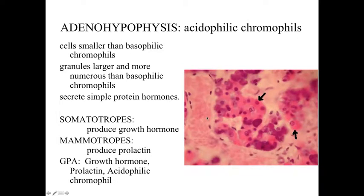The second category of cells within the anterior pituitary, the adenohypophysis, are going to be the acidophilic chromophils. Acidophilic because they're going to be taking up the eosin — staining pink in hematoxylin-eosin-stained specimens. They're going to be smaller cells with larger granules than the basophilic chromophils, and they're going to be involved with secreting simple protein hormones. Two categories: somatotropes, involved with production of growth hormone, or mammotropes, involved with production of prolactin. You can remember acidophilic chromophils with the mnemonic GPA: growth hormone, prolactin, acidophilic chromophil.